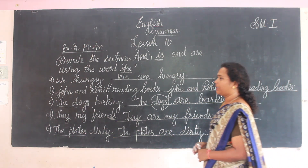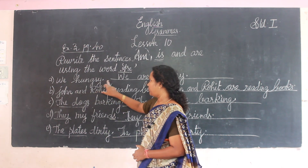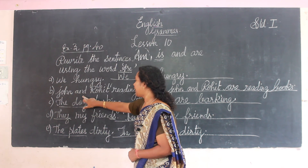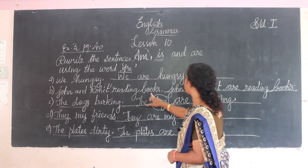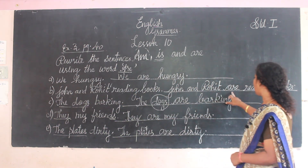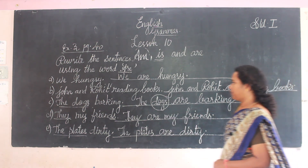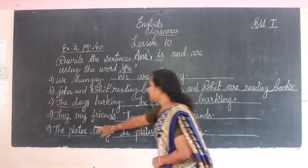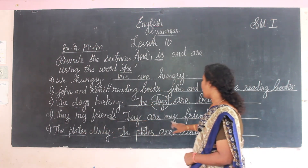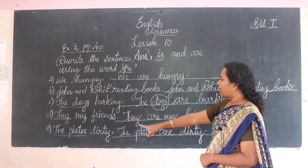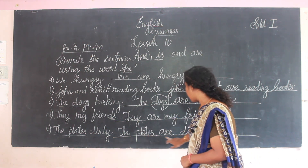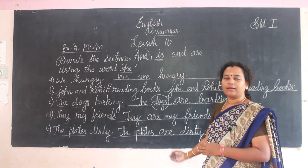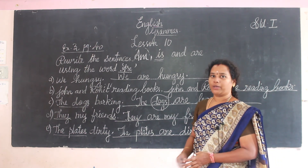So, to summarize: 'We are hungry.' 'John and Rohit are reading books.' 'The dogs are barking.' 'They are my friends.' 'The plates are dirty.' Keep all the conditions in your mind and write it. Thank you very much.